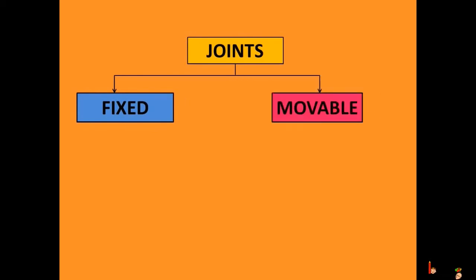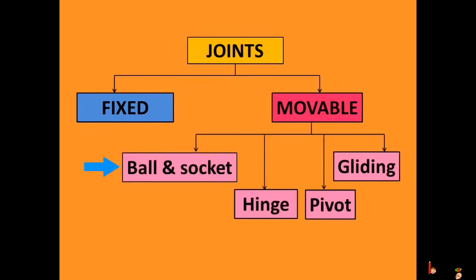The joints are of two types: fixed and movable joints. The movable joints can be further categorized into four groups: ball and socket joint, hinge joint, pivot joint, and gliding joint.